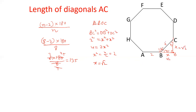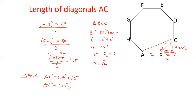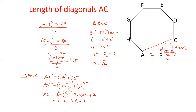Now we have to calculate the length of AC. Triangle AOC is also a right angle triangle. In triangle AOC, we can apply Pythagoras theorem: AC squared equals OA squared plus OC squared. OA equals AB plus OB, that is 2 plus X, and X is root 2, so OA equals 2 plus root 2. Therefore AC squared equals (2 plus root 2) whole squared plus (root 2) whole squared. Expanding: 4 plus 2 plus 4 root 2 plus 2, which gives AC squared equals 8 plus 4 root 2.